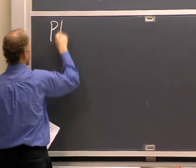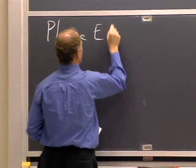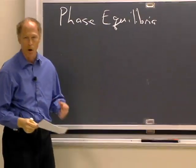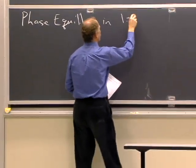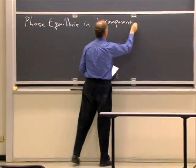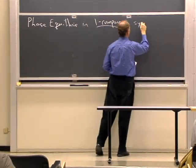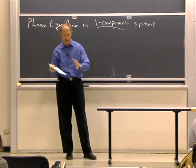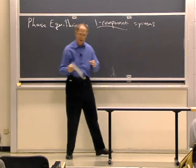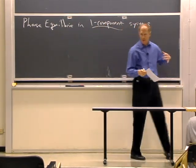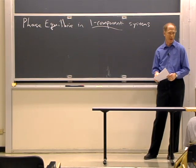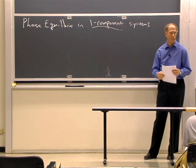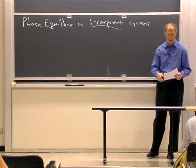We'll start with phase equilibria in just one-component systems. In other words, we're going to start with a single substance and see how it goes from solid to liquid to gas. Then we'll see what happens in multiple-component systems, where we'll be able to talk about solubility and mixtures of liquids, and into which phase different constituents in a mixture will go.